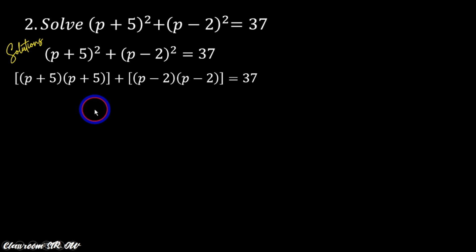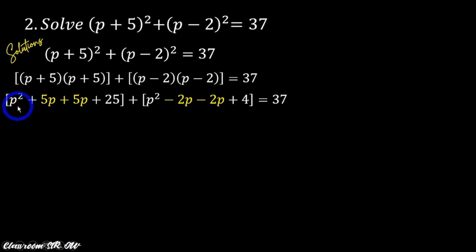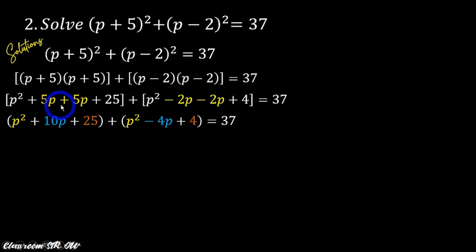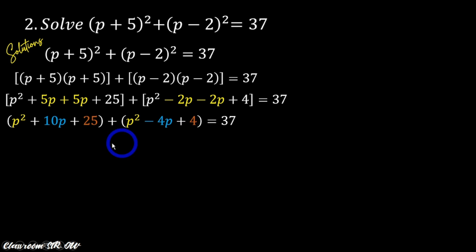Recalling the FOIL method: p times p is p squared, 5 times p is 5p, p times 5 is 5p, and 5 times 5 is 25. We do the same for the expanded form of (p minus 2) squared. As you can see, the similar terms are highlighted — we will be combining them. So 5p plus 5p is 10p; and for the other expansion, negative 2p minus 2p is negative 4p. We then combine all similar terms: p squared and p squared, 10p and negative 4p, and 25 and 4. We then transpose 37 to the other side of the equation since it must be equated to zero.